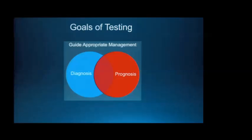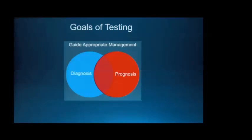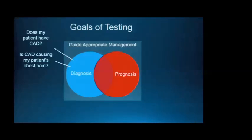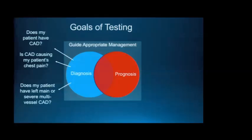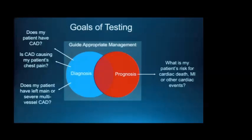With diagnosis alone we have limited information, and clinicians use the concept of diagnosis and prognosis on a daily basis. When comparing the effectiveness of these tests, this really boils down to a few critical questions: Does my patient have coronary artery disease? Is the coronary artery disease actually causing chest pain? Does my patient have severe left main or multi-vessel coronary disease? And what is my patient's risk for bad outcomes such as cardiac death?